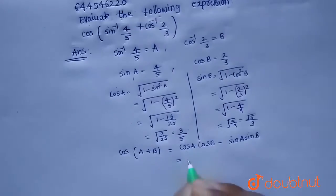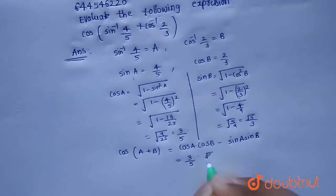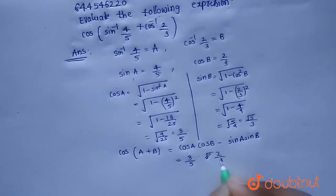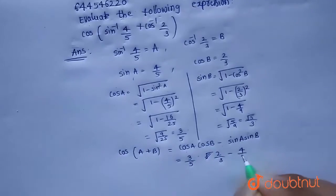So cos a is 3 by 5 and cos b is 2 by 3, and sin a is 4 by 5 and sin b is equals to root 5 by 3.